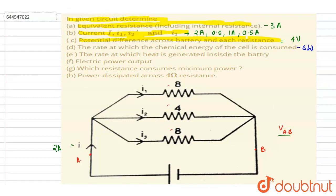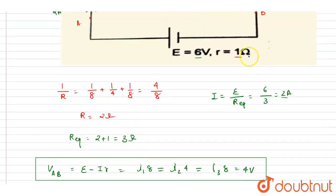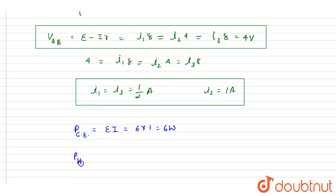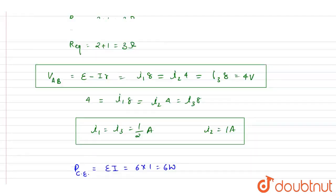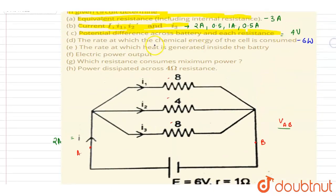The rate at which heat is being generated inside the battery is i² × r. Here i is 2 amperes and r (internal resistance) is 1 ohm, so the rate of heat generation is 2² × 1 = 4 watts.